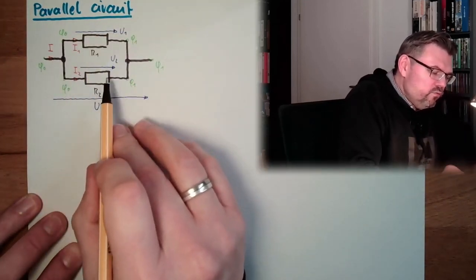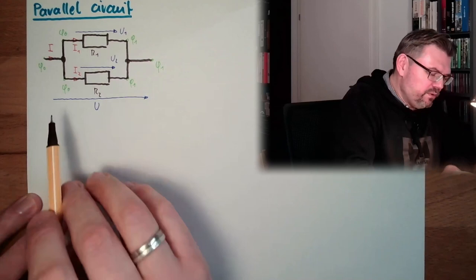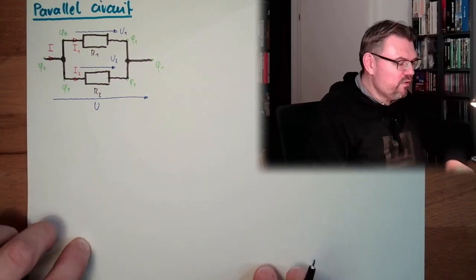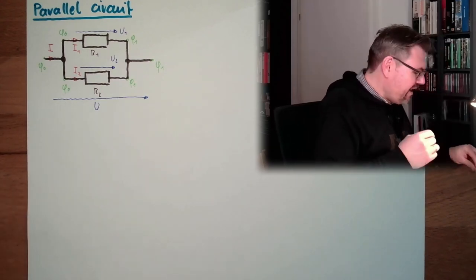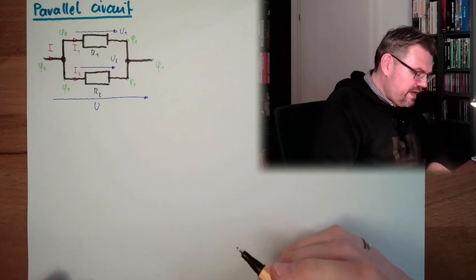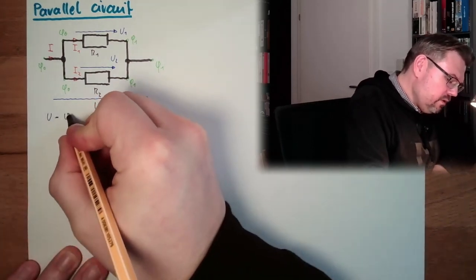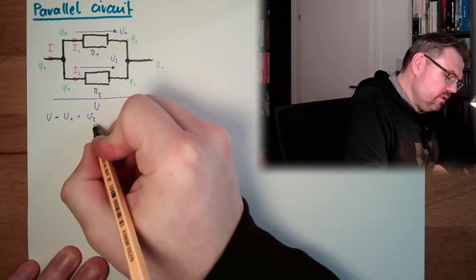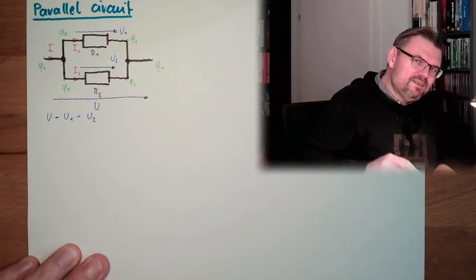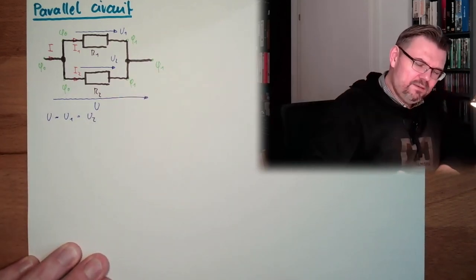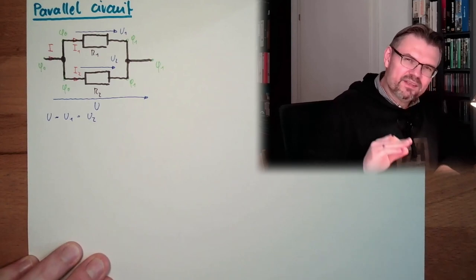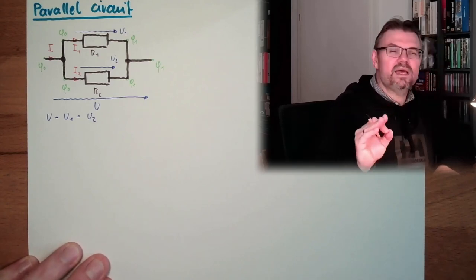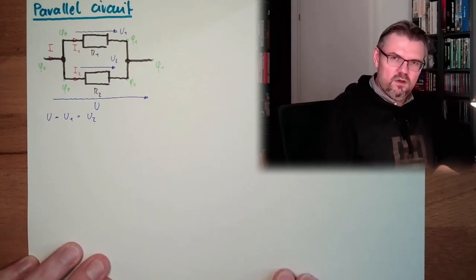So U1 and U2 are also the difference between V0 and V1. So from this we can already say that U equals U1 equals U2. All voltages are of the same size, same direction, everything. There is the same voltage, there is the same potential difference.